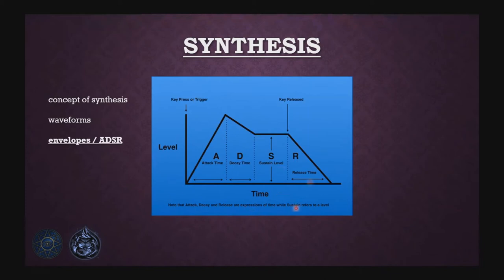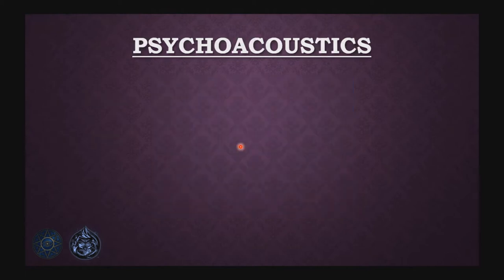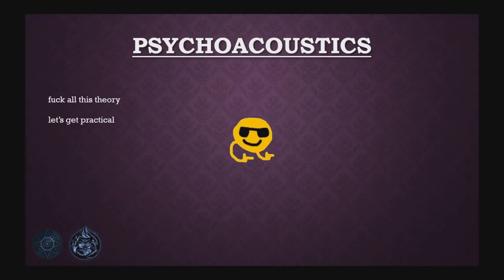Envelopes — this looks really complicated but it's very simple. When you press a key, your volume goes up in the attack phase, down in the decay phase, holds in the sustain phase, and when you let go, it releases and the volume slowly decays over time. ADSR — attack, decay, sustain, release — is a general phenomenon used everywhere in audio to control anything. I could map this envelope to volume, pitch, or anything. I was going to go into psychoacoustics, but let's get practical.